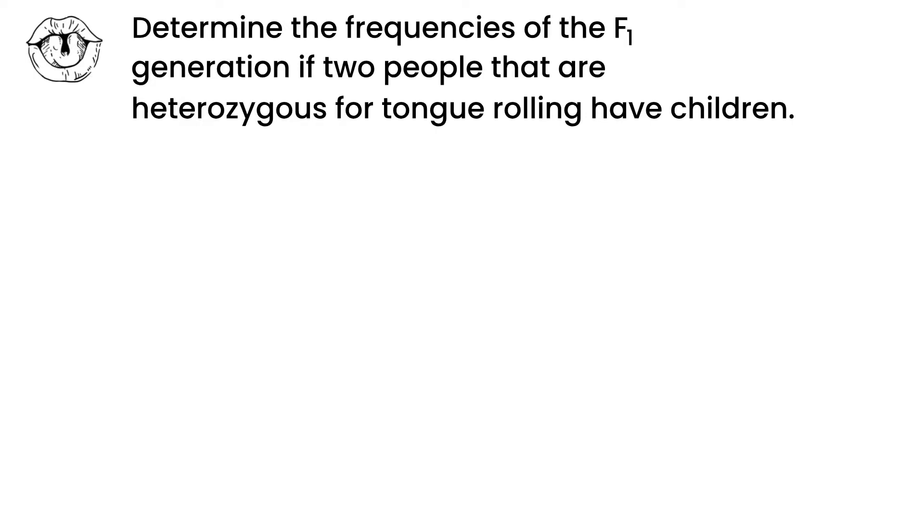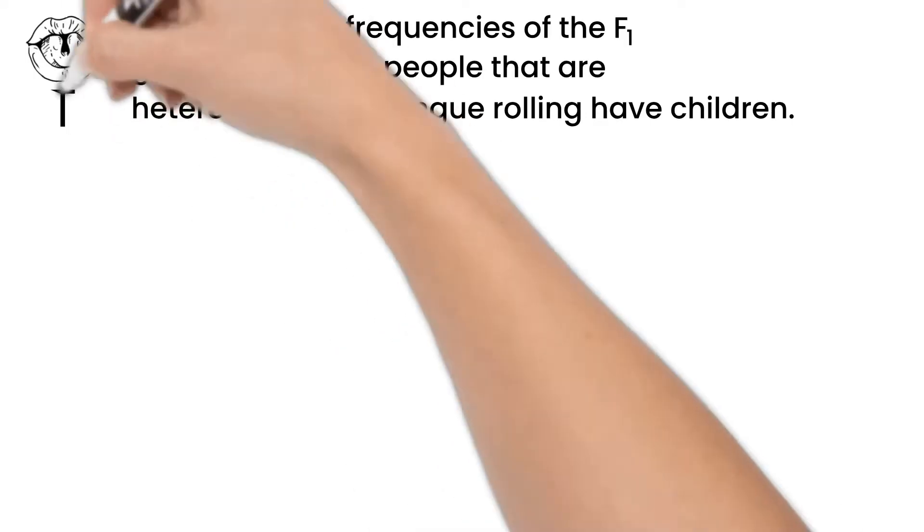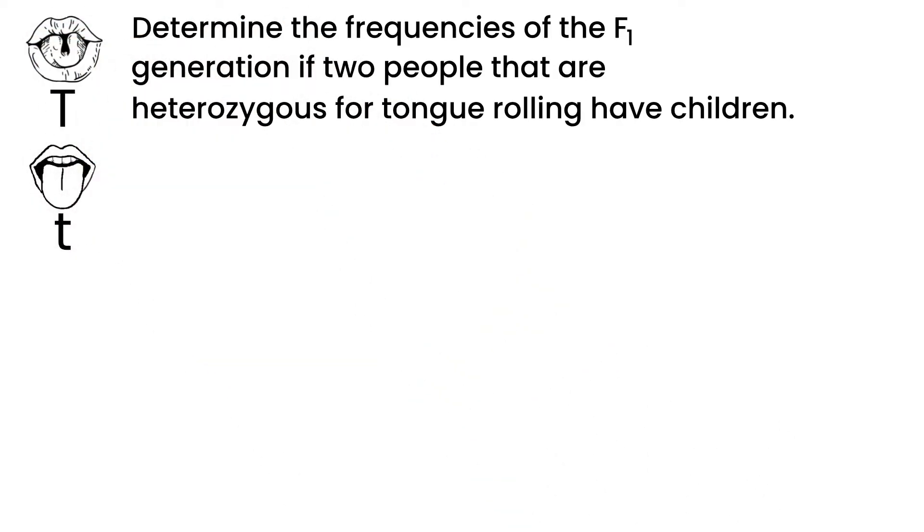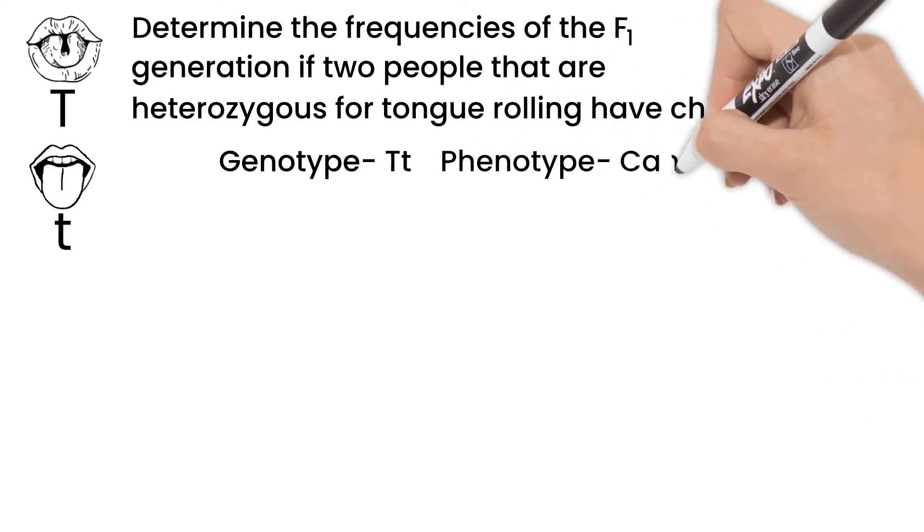Being able to roll your tongue is dominant, so we represent it with a capital T, not rolling with a lowercase t. Remember to use the same letter when talking about the same gene. As the parents are heterozygous, they both have the genotype capital T lowercase t, and both have the phenotype of being able to roll their tongue.